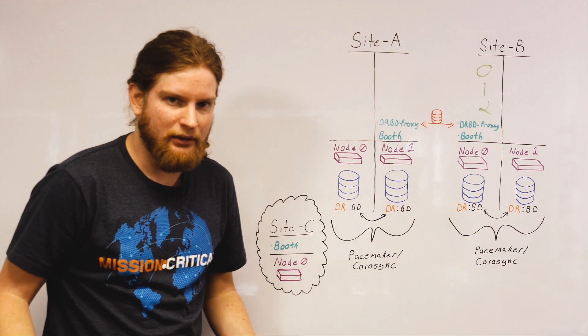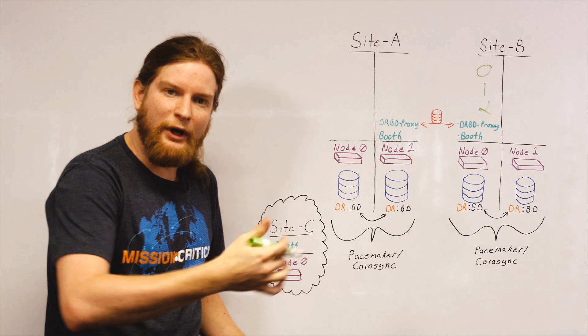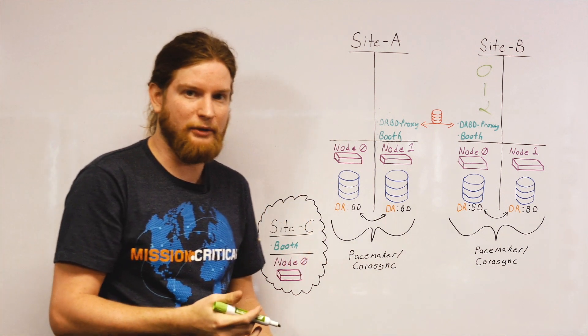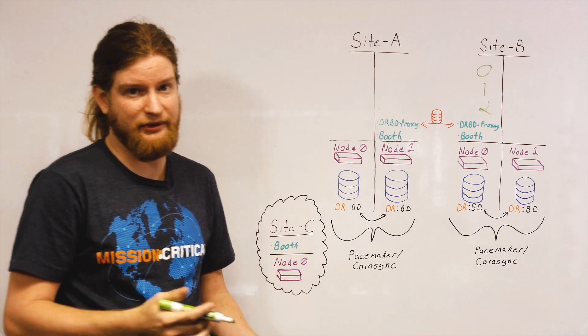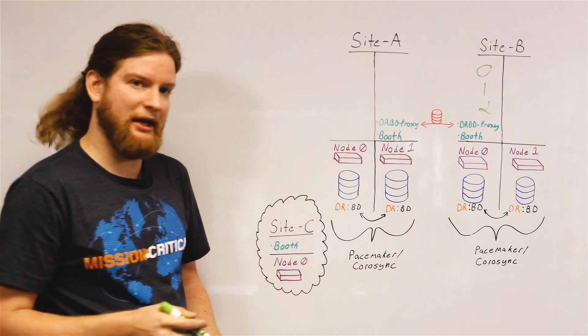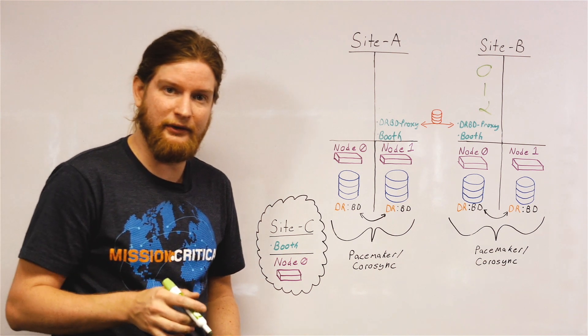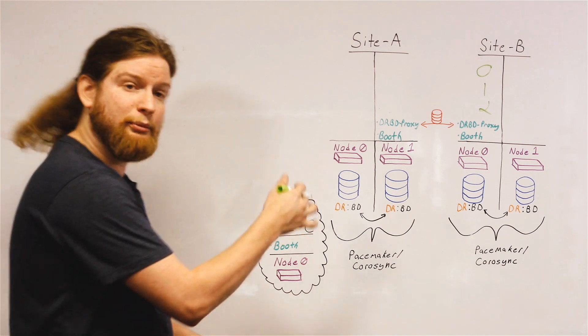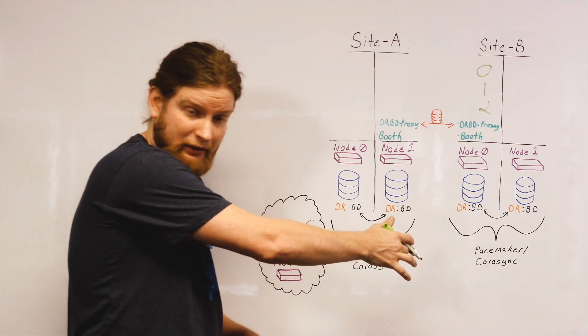But how do they get there? We need some way to make decisions about whether a service is running on a site or whether it's not, about whether it's allowed to run on a site or whether it's not. So that's where Booth comes in. Booth is a decision-making technology that can work over distances.